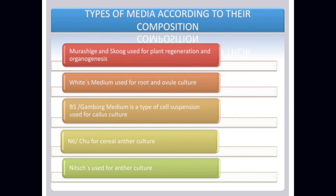Murashige and Skoog (MS) medium: used for plant regeneration and organogenesis. White medium: used for root and olive culture. B5 Gamborg medium: a type used for cell suspension and callus culture. Nitsch medium: for anther culture. Nets: used for anther culture.